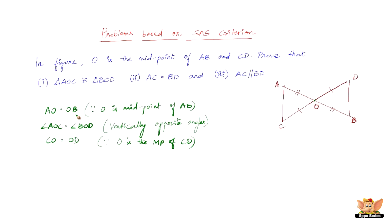Just repeating these three points: AO equals OB, angle AOC equals angle BOD which are vertically opposite angles, and CO equals OD because O is the midpoint of CD as well.